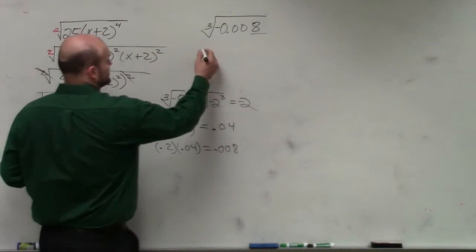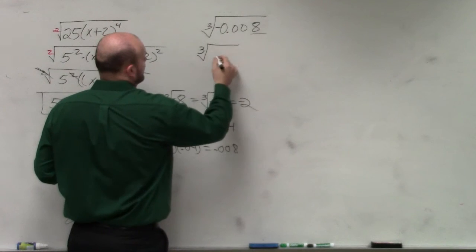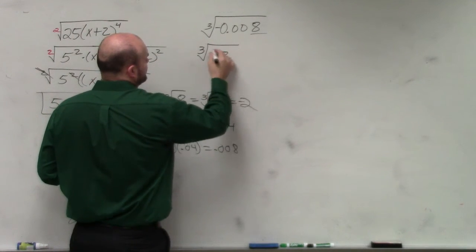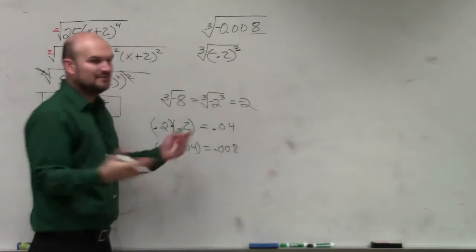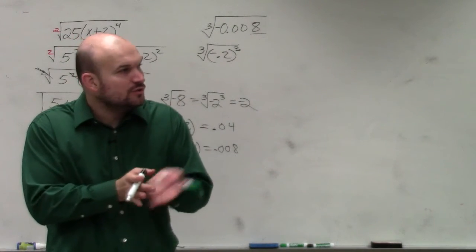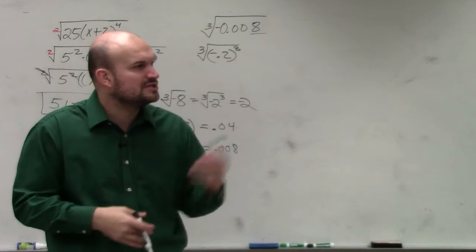So therefore, this answer would be cube root of negative 0.2 cubed. And if you have a calculator, you can try it. Guess and check. Do 0.2 times 0.2 times 0.2.